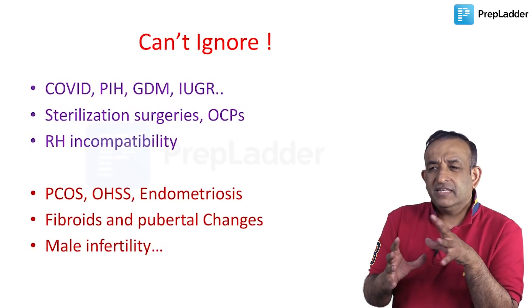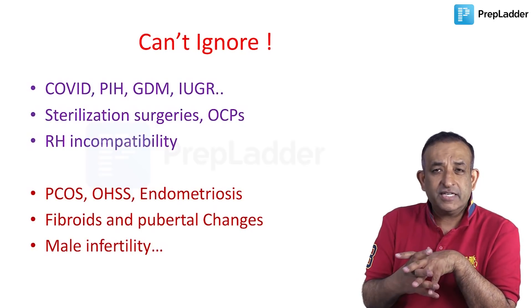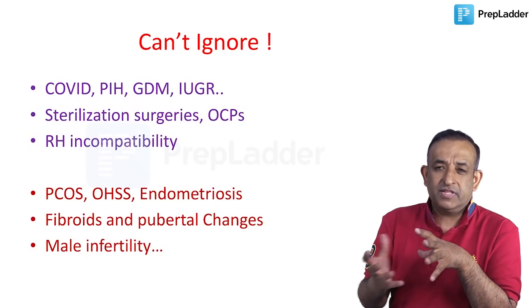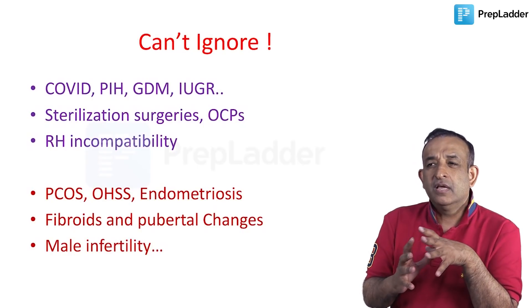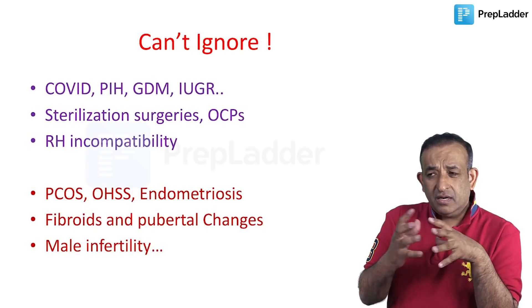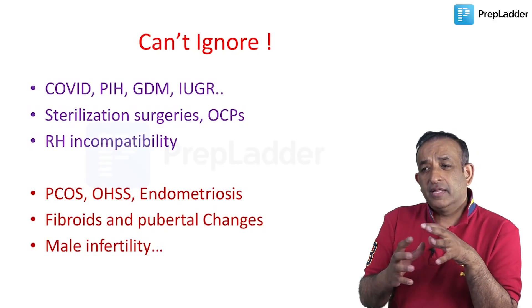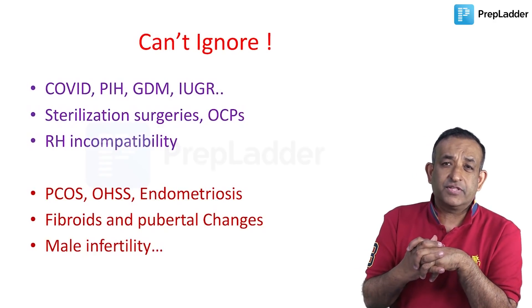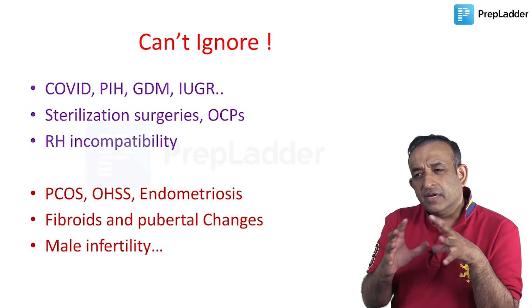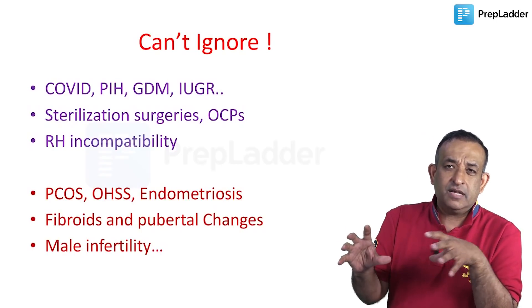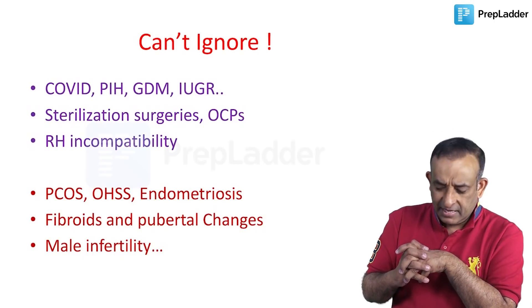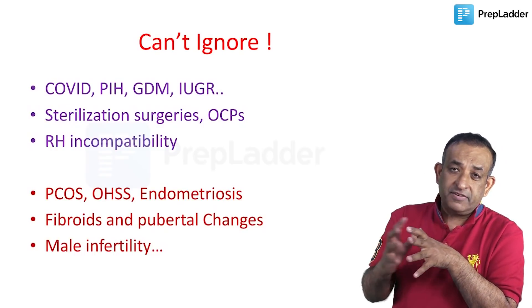One topic which is very close to my heart and often finds mention in your exams is RH incompatibility — the various aspects of managing a baby born to an RH-incompatible mother. There is a lot of discussion about the dose of anti-D to be given and the timing of anti-D. We have discussed this at length in the app and in the prep ladder forum. It is a complicated topic, but if you read it from beginning to end in the way we have given it, it will become easier — do revise it on the app before the exam.